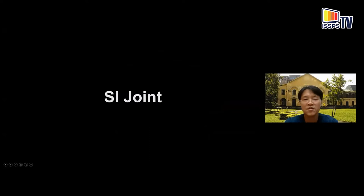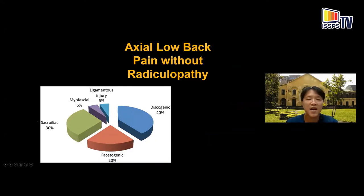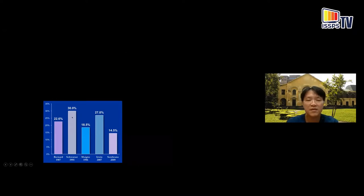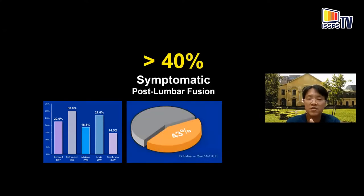Next, we move to the SI joint. SI joint pain is a very common cause of axial low back pain. According to some studies, it can account for as high as 30% of axial low back pain without radiculopathy — somewhere between 15 to 30%. But for pain doctors managing patients with failed back surgery syndrome still suffering from axial back pain, it's as high as 40%. So SI joint management is very important in chronic pain management.